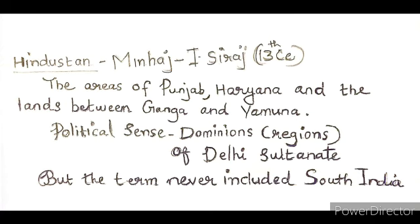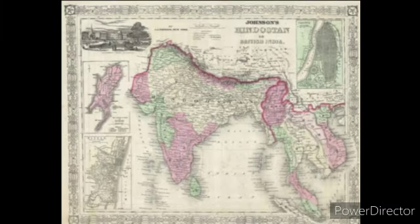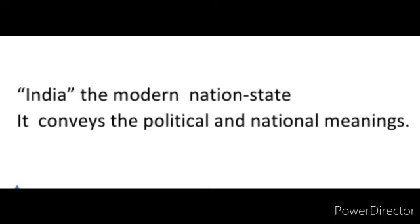In the 16th century, Babur also used the word Hindustan to describe the geography, the fauna and culture of the inhabitants of the subcontinent, similar to the way the poet Amir Khusrau used the word Hindustan in the 14th century. Both Amir Khusrau and Babur used the term to describe the geography of India. In the Mughal period, Hindustan was the common term for India.